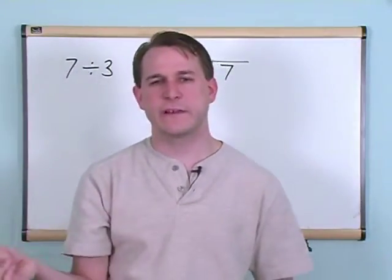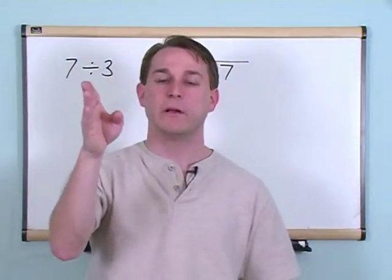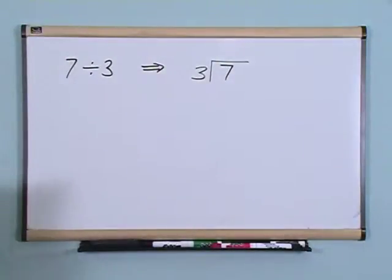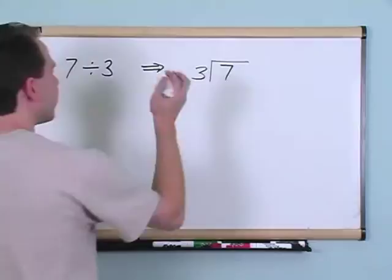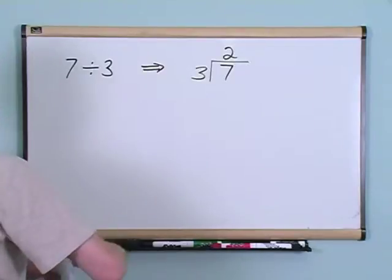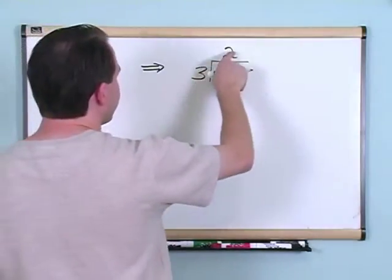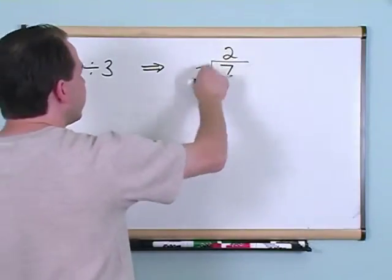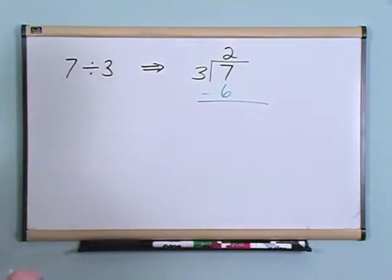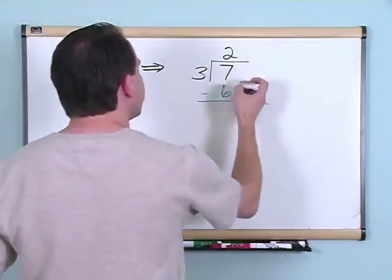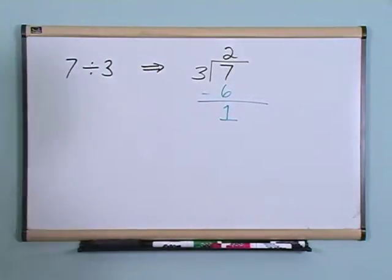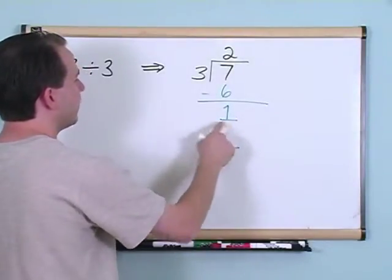So we're going to say three will go into seven two times, giving us six. We put the two here and say two times three is six. We put a line there and subtract, just like before. Seven minus six gives you one. Now when you have a number down here, remember in all the other problems we had zero, but now we have a one.